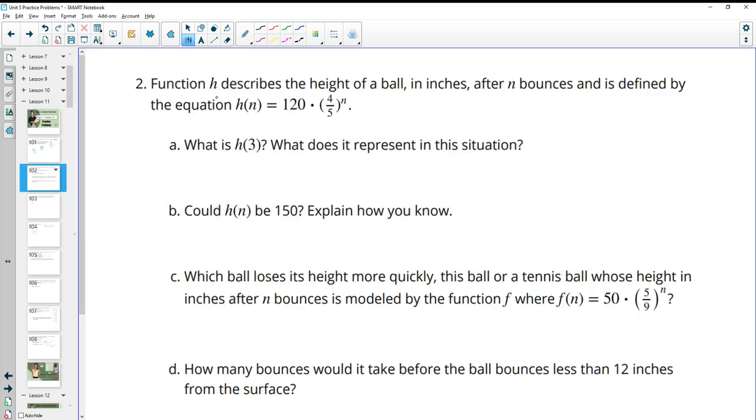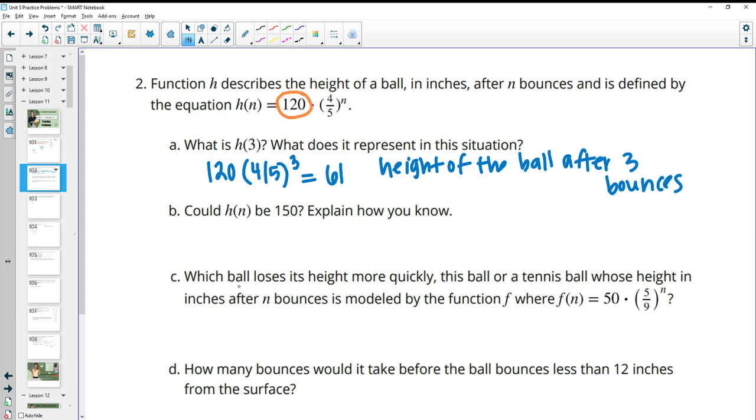Number two, function h describes the height of a ball in inches after N bounces. And it's defined by this equation. What is h(3)? So h(3) is going to be 120 times 4/5 to the third power, which will give you approximately 61. And this represents the height of the ball after 3 bounces. Could h(N) or the height of the ball be 150 and explain how you know?